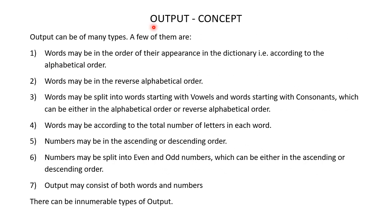Let's now understand the concept of output. Output can be of many types. In the output, words may be in the order of their appearance in the dictionary — that is, according to alphabetical order. In the output, words may be in the reverse alphabetical order. Or in the output, words may be split into words starting with vowels and words starting with consonants, which can be either in ascending or descending order.